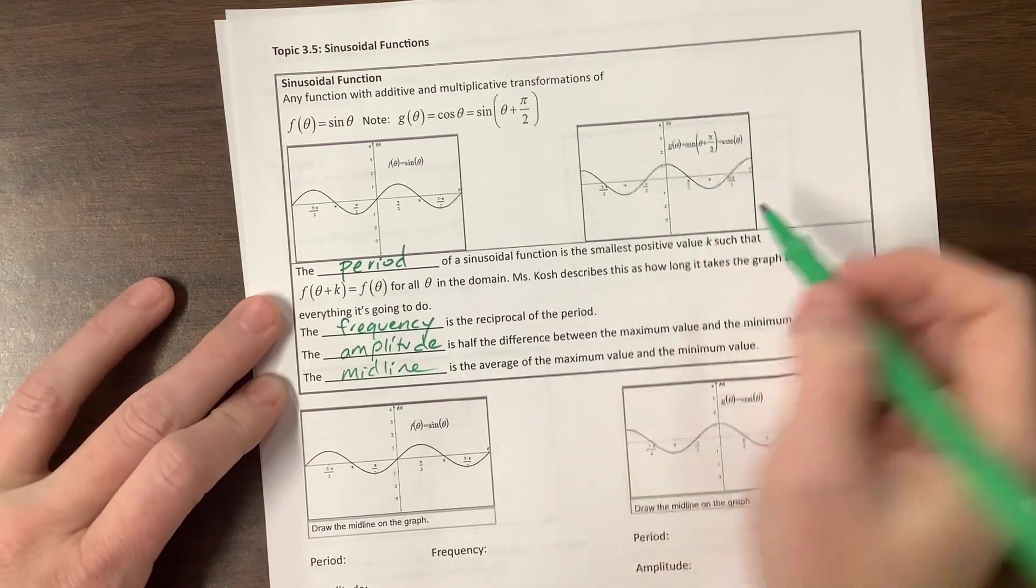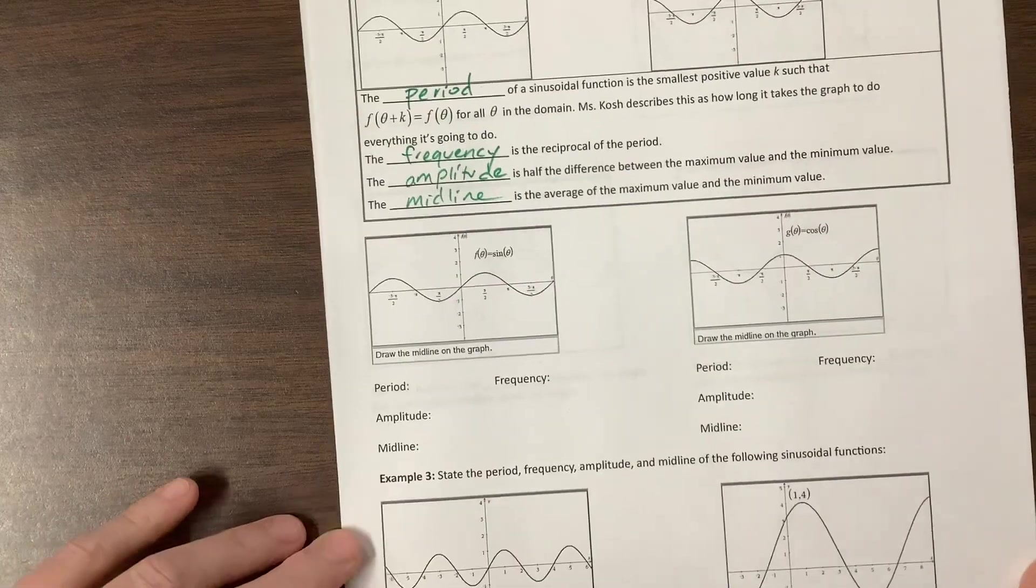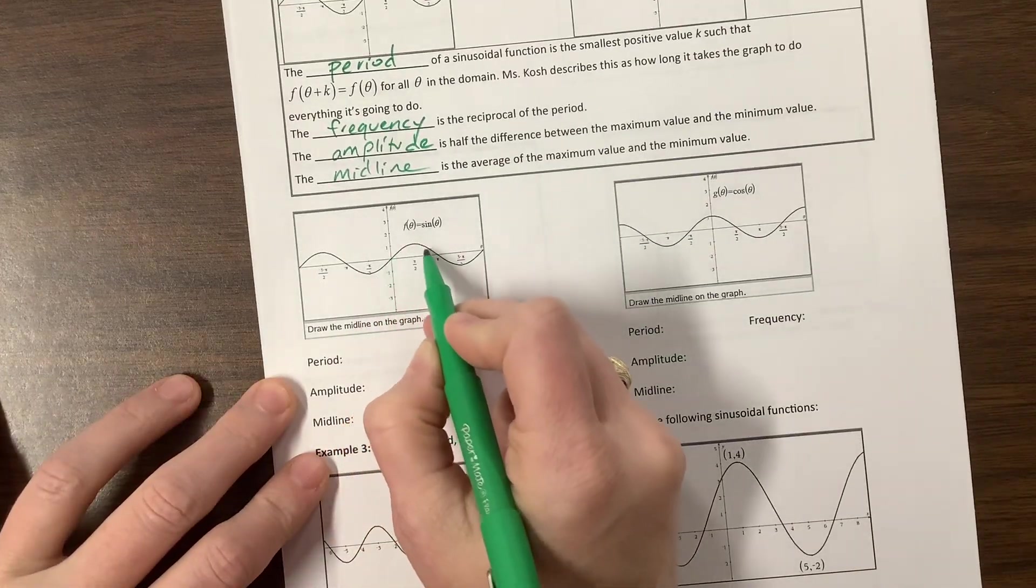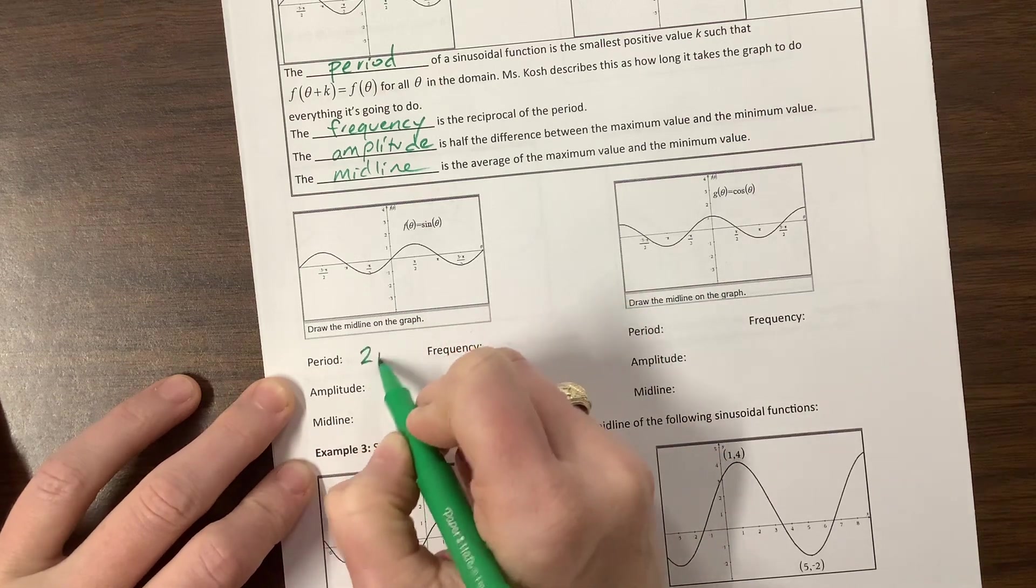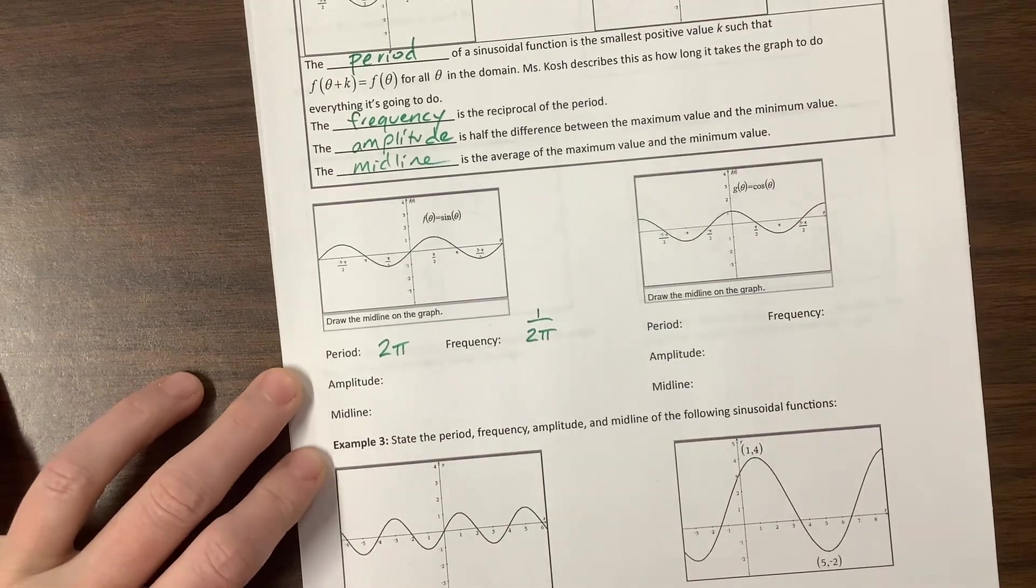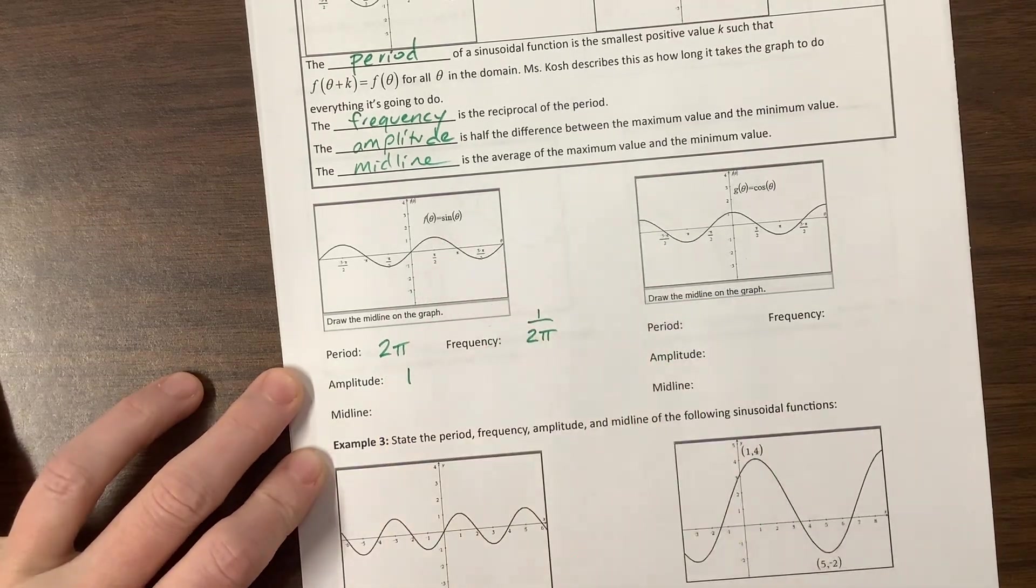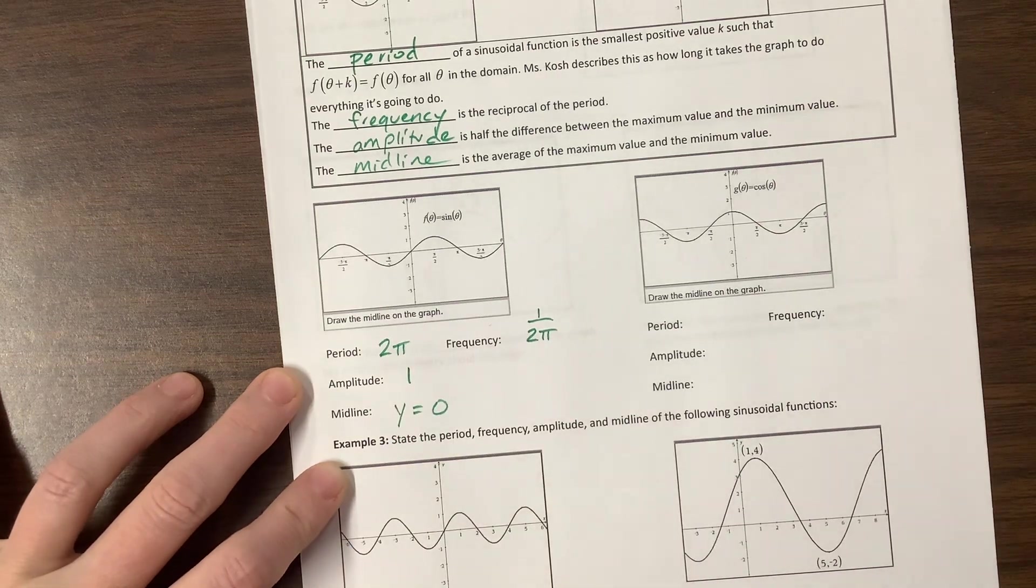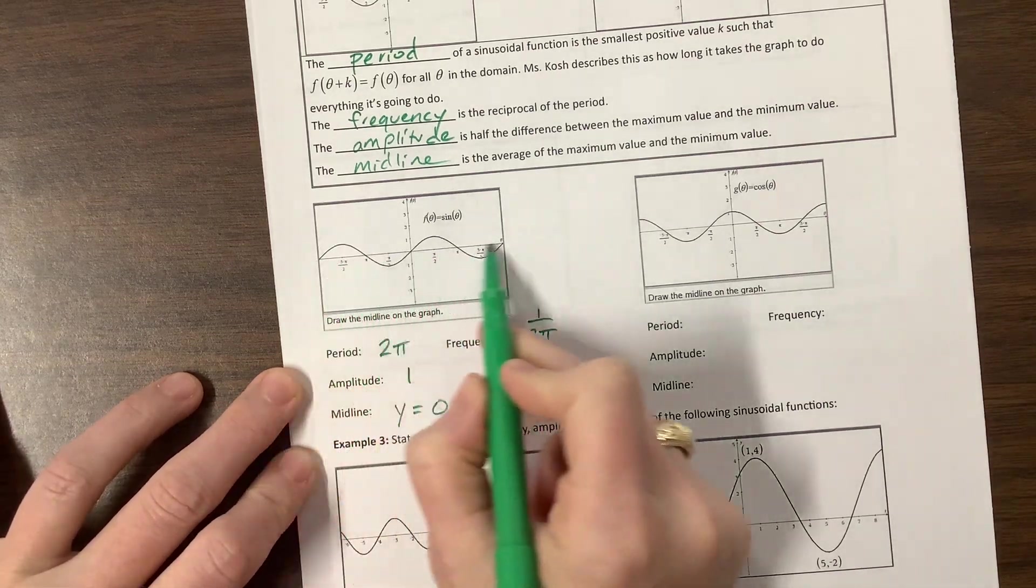The amplitude of the parent function—well, here's the sine, let's write these down. The period, how long did it take us to do everything we're going to do? It took us two pi. So the frequency is one over two pi. The amplitude, how high did it go? It went up one unit. The midline is y equals zero, because it's just right through the middle of this function.